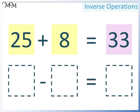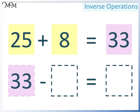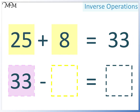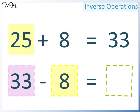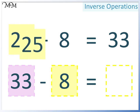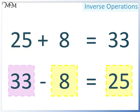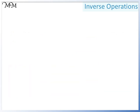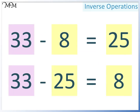We can also write this subtraction in a different order. The largest number must still be at the start, because we are subtracting. In the second space we can have either of the two smaller numbers. This time we will write 8 here, so in the final space we must have 25. So we have 33 take away 8 equals 25, and 33 take away 25 equals 8.